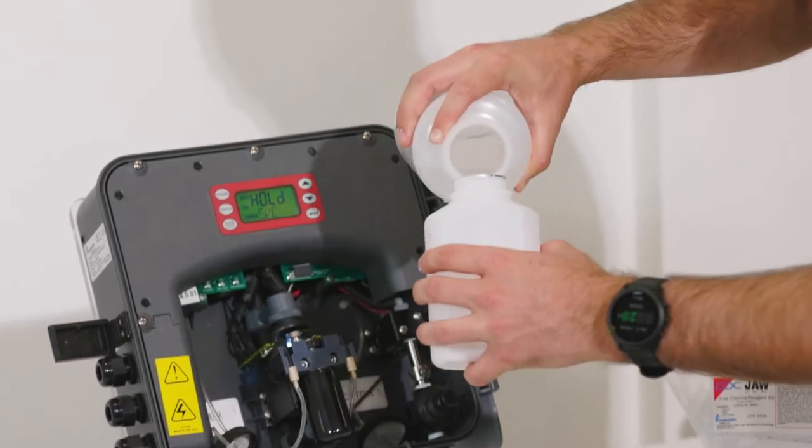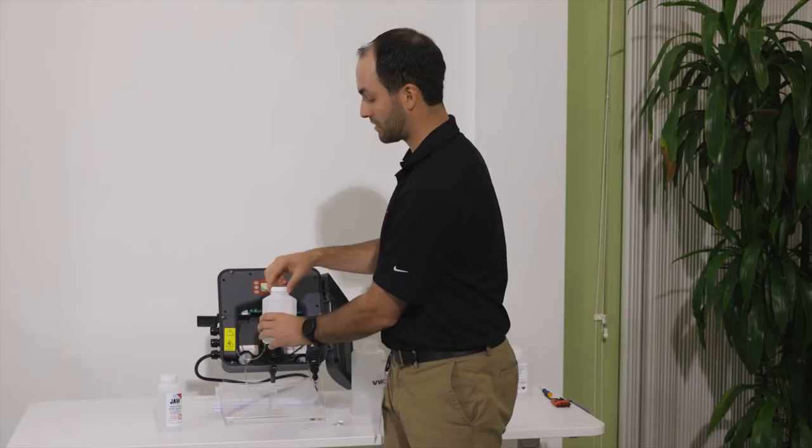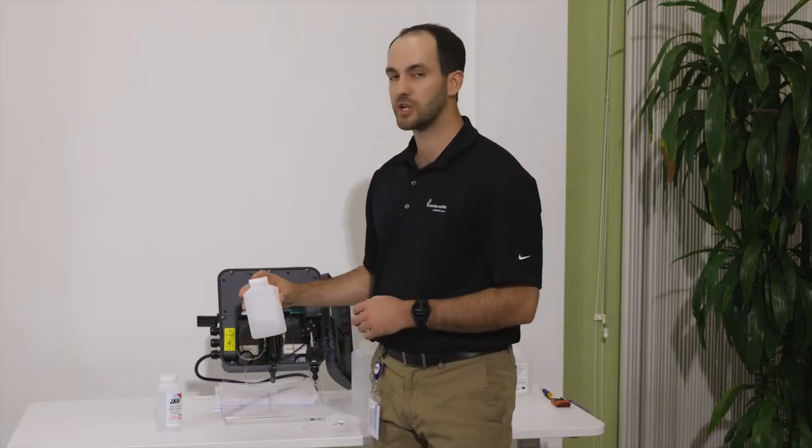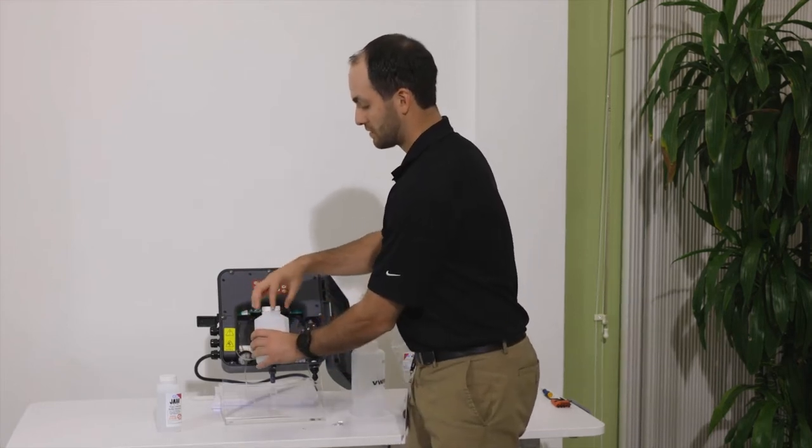Take your DI water. We'll fill our indicator about a quarter way. Put the top on and we'll invert it very gently. Again, no need to shake this too vigorously.